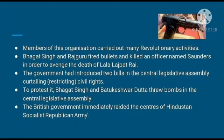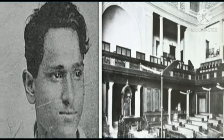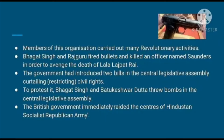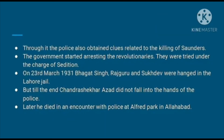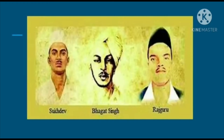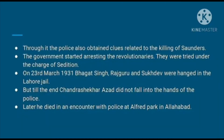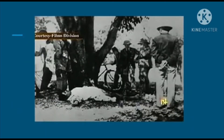The government had also introduced two bills in the Central Legislative Assembly curtailing civil rights — meaning imposing restrictions on civil rights. To protest this, Bhagat Singh and Battukeshwar Datta threw bombs in the Central Legislative Assembly. The British government immediately raided the centres of the Hindustan Socialist Republican Army and obtained clues related to the killing of Saunders. The government started arresting the revolutionaries and tried them under the charges of sedition — meaning attempting to provoke against the authority. On 23rd March, Bhagat Singh, Rajguru, and Sukhdev were hanged in Lahore jail. Chandrasekhar Azad never fell into the hands of the police, but died in an encounter with police at Alfred Park in Allahabad.